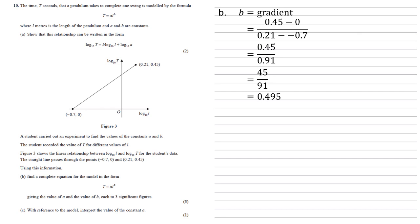We can now substitute this b into the log 10 t equation along with one of our coordinate pairs. I'm going to use the minus 0.7 and the zero.